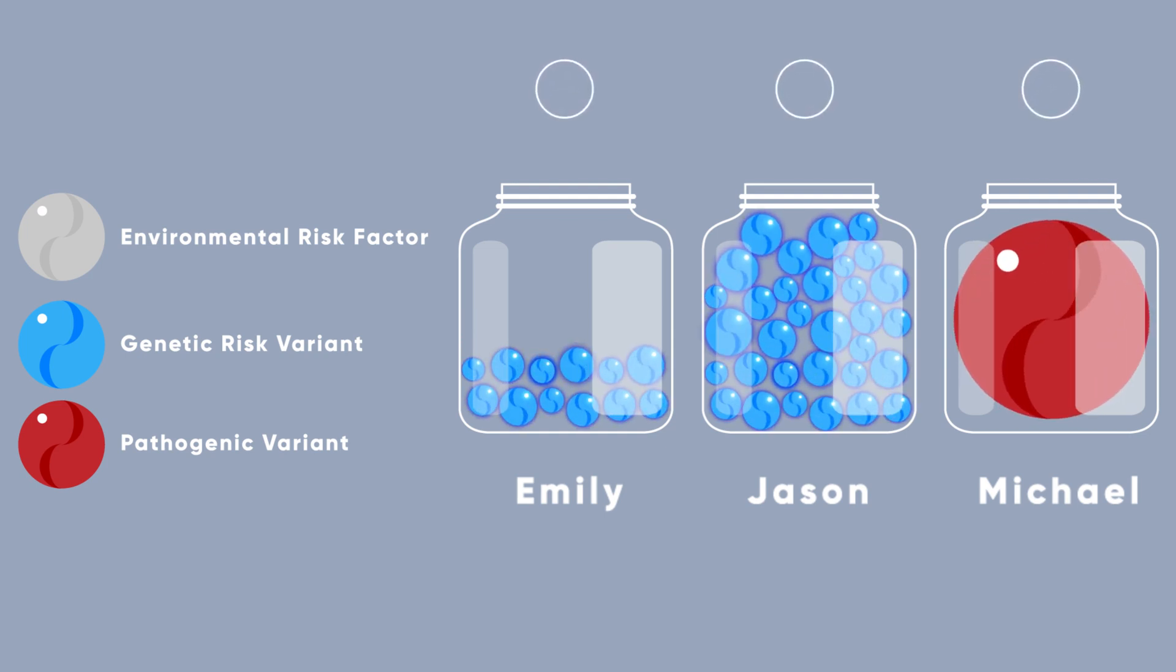Certain variants have a large effect. In some cases, a single variant in one gene can have a large enough impact to cause disease. While very rare, this person's variant is large enough to make the jar overflow.